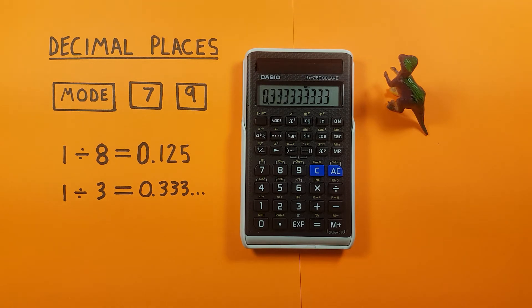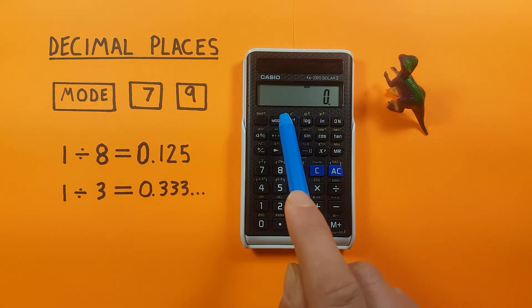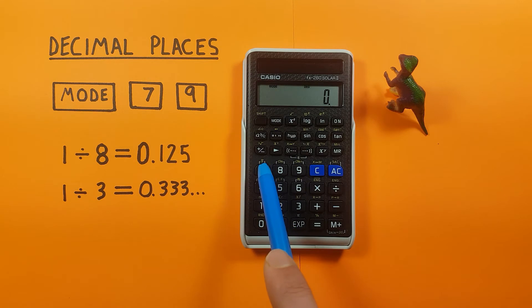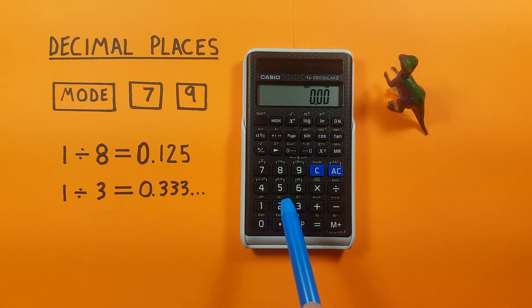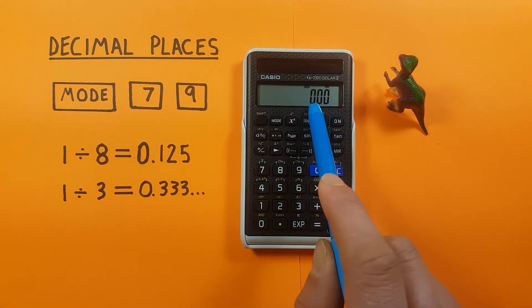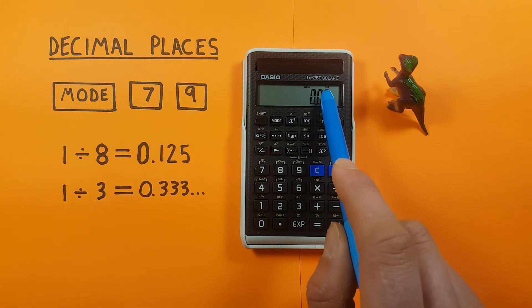But we can also set a specific number of decimal places to appear on this calculator. To do that we press the mode key and then the 7 and then we choose however many decimal places we want to see. So if we want to have two decimal places we press 2. You can see we have two decimal places on there now and the word fix has appeared in the top right hand corner of the screen.